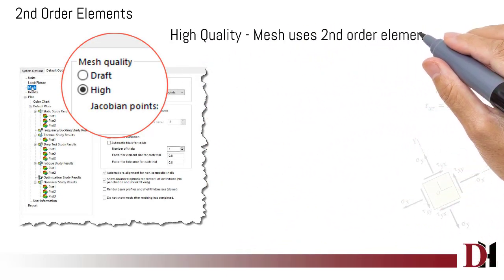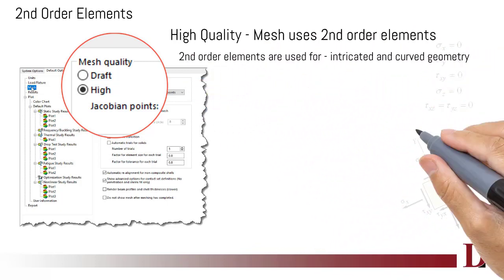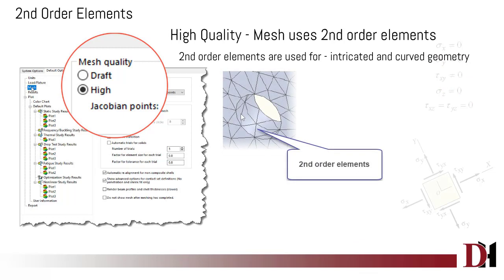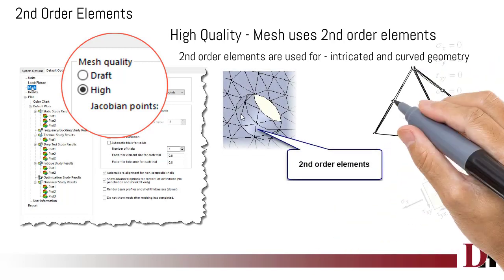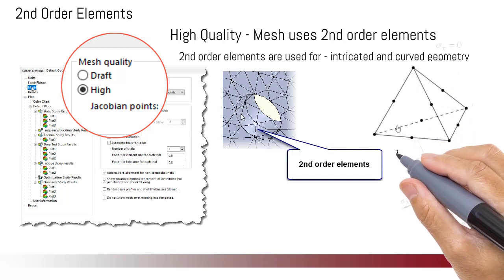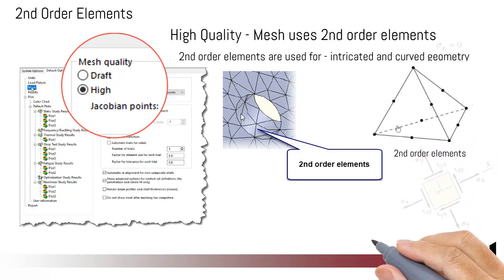Second order elements are used in high quality meshing. These types of elements are used for curved and intricate geometry. Second order has good chances of capturing curvature because of mid-side nodes. Second order elements will have mid-side nodes in addition to nodes at the corners.